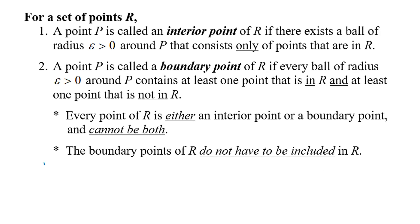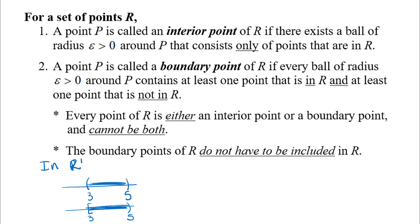Let's look at this in R1 first. We're basically talking about intervals — say the interval from 3 to 5 not including the endpoints, or an interval from 3 to 5 including one endpoint but not the other. These intervals are the regions we're considering, and we want to identify interior points and boundary points. The words interior and boundary should relate to what you think of as the inside or the edge of a region.